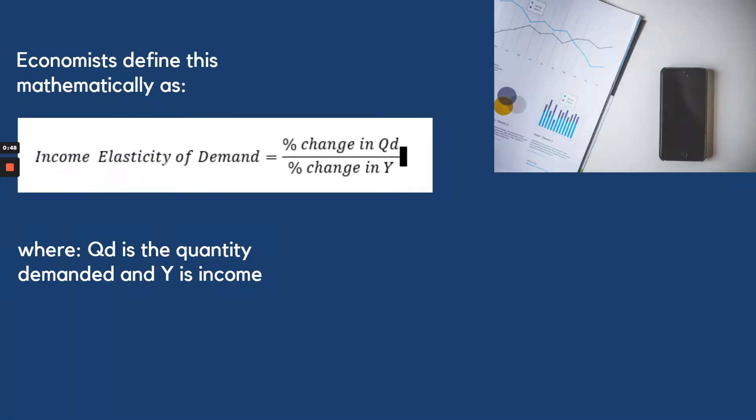Mathematically, this is how we are going to get the income elasticity. The percentage change or income elasticity of demand is equal to percentage change in quantity demanded over percentage change in income.